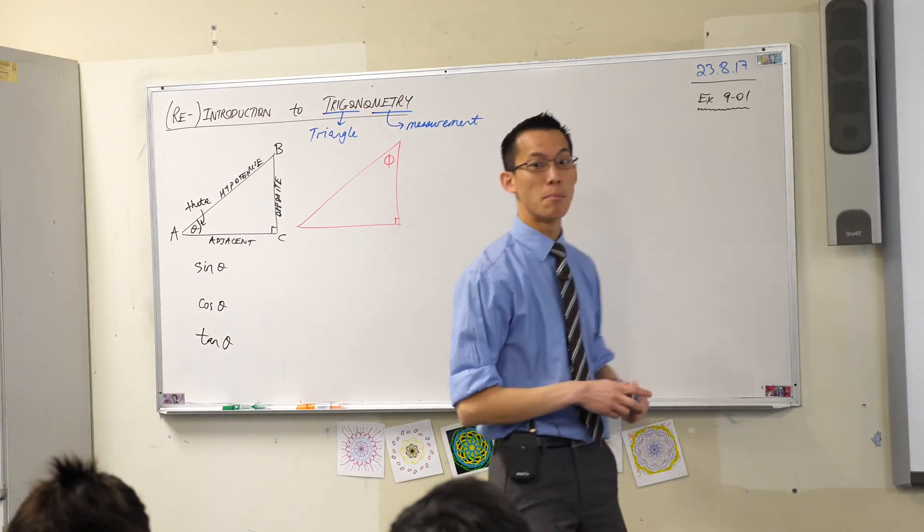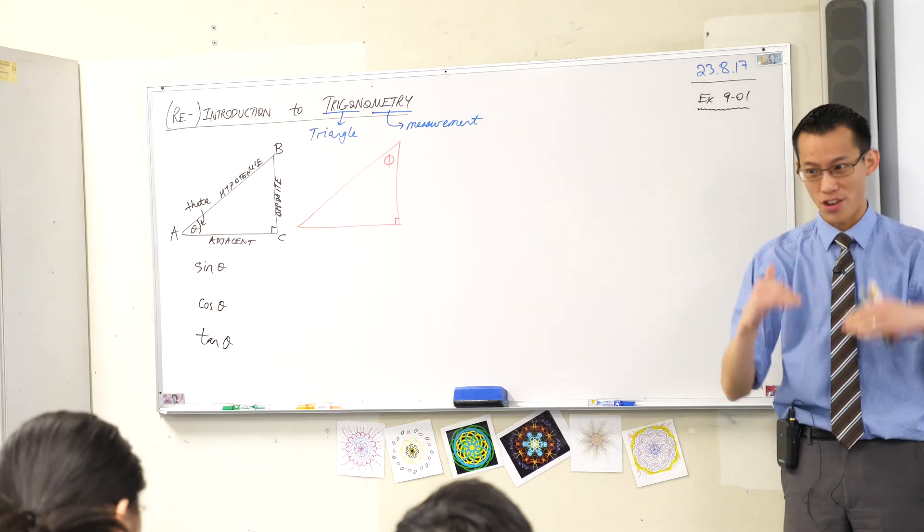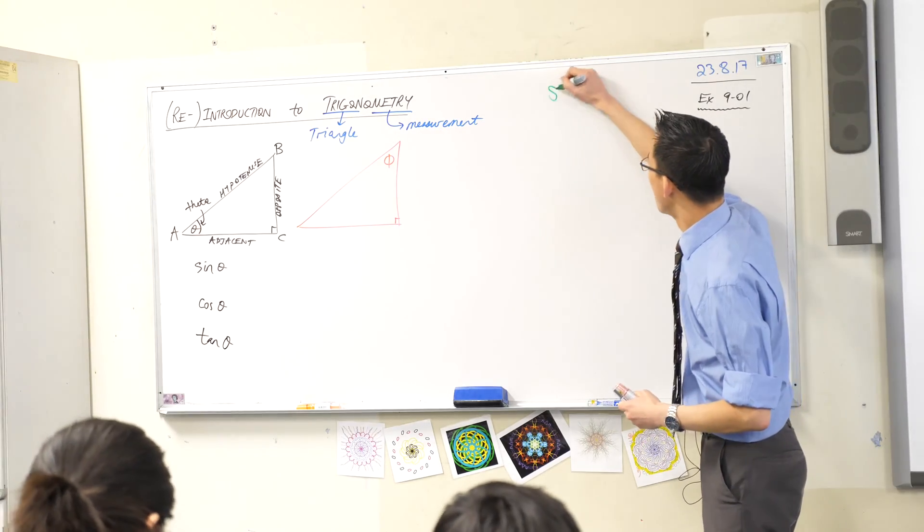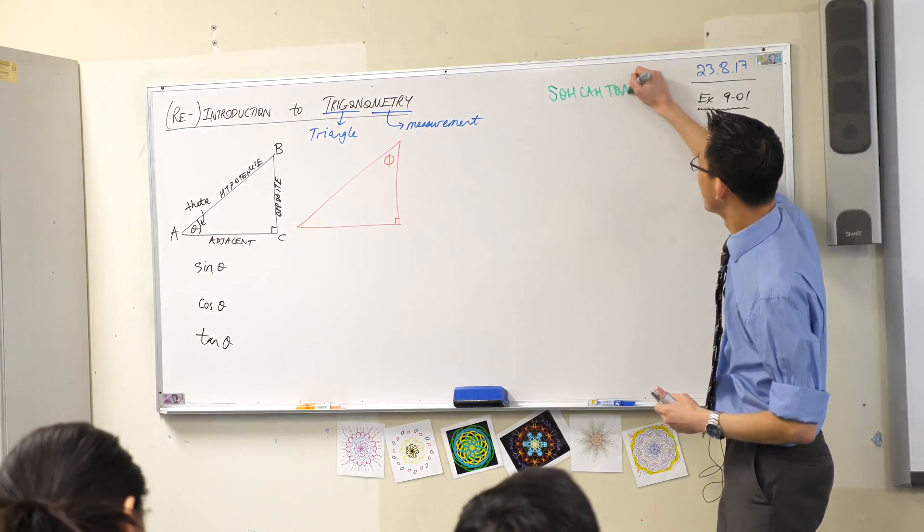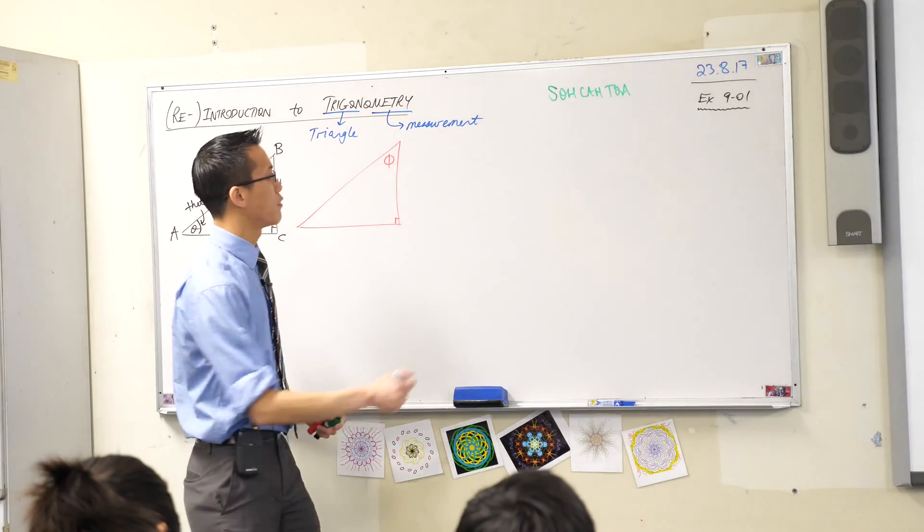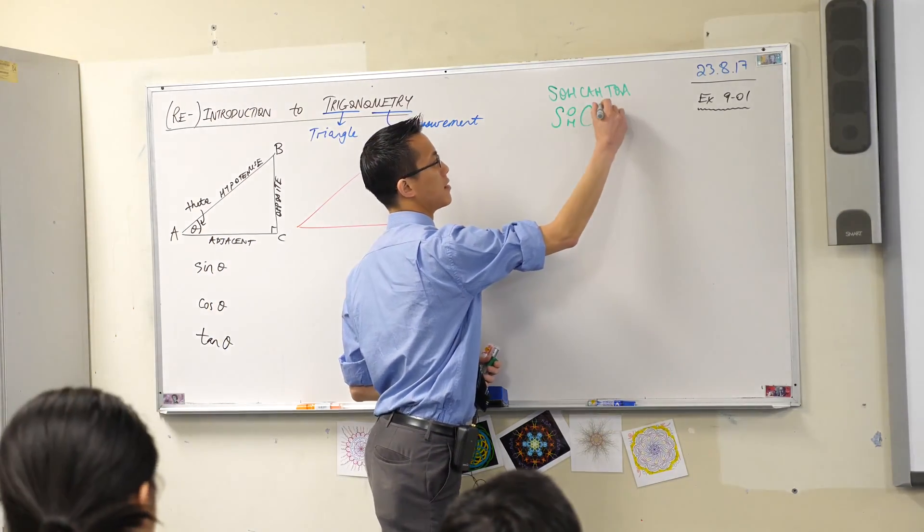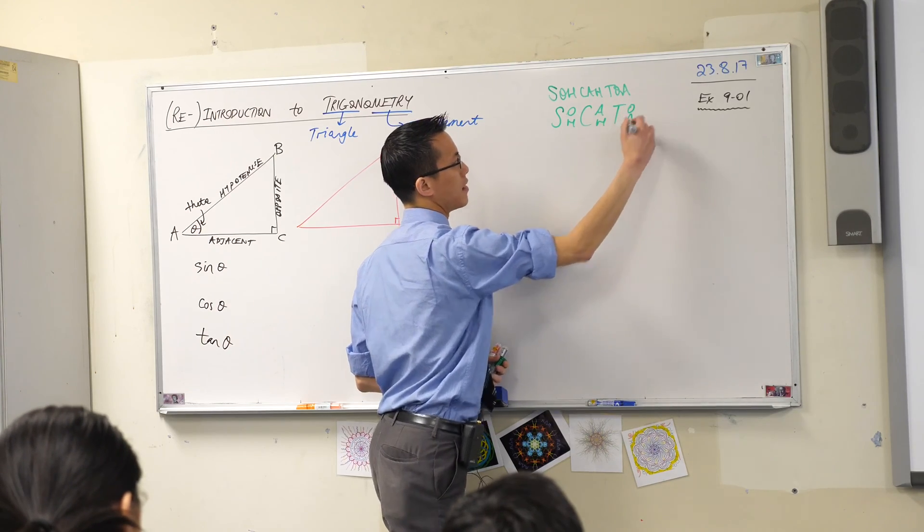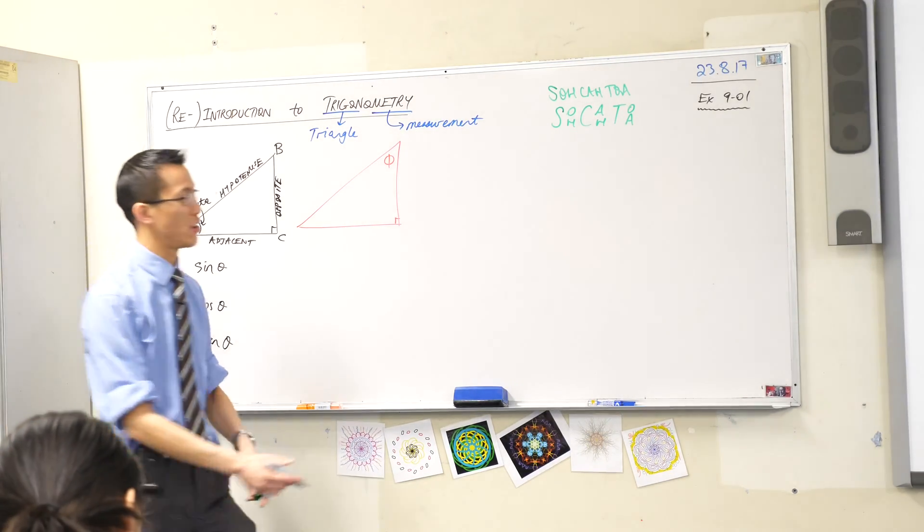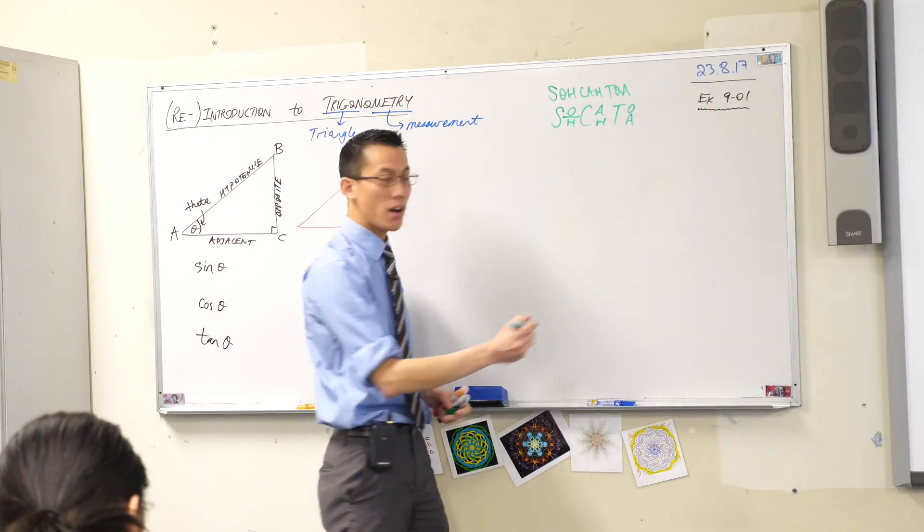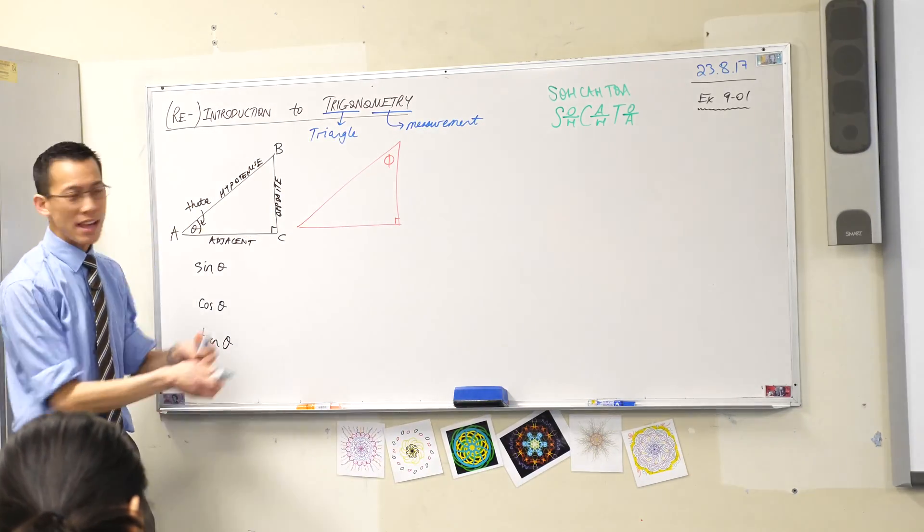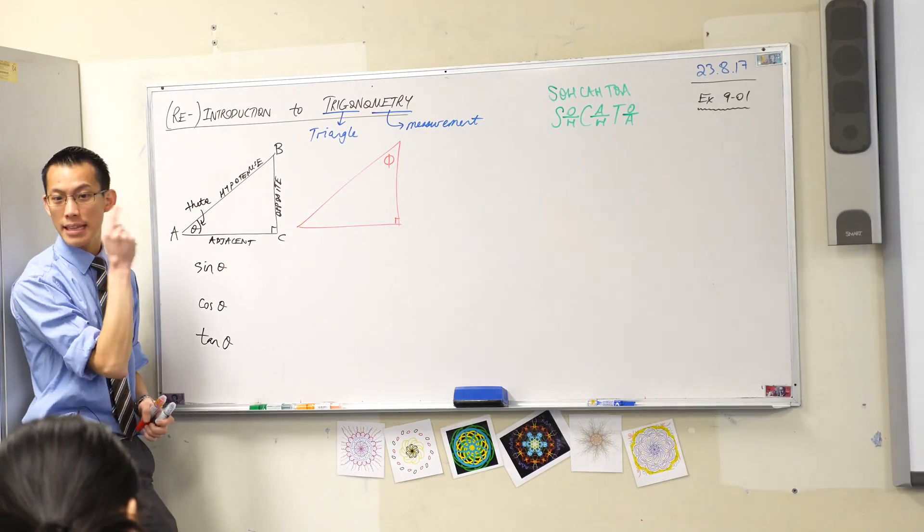Now last year you learnt a mnemonic device, a memory device for remembering which ratios match with which sides. What was the device? Soh-cah-toa. Let's all write it up the top. You might like to write it like this. Like so. Some people also, you may have learnt it written like this. Either of these is fine. The second one, what it helps you remember, is the order of the ratios. So sine is opposite on hypotenuse. Cos is adjacent on hypotenuse. And tan is opposite on adjacent.